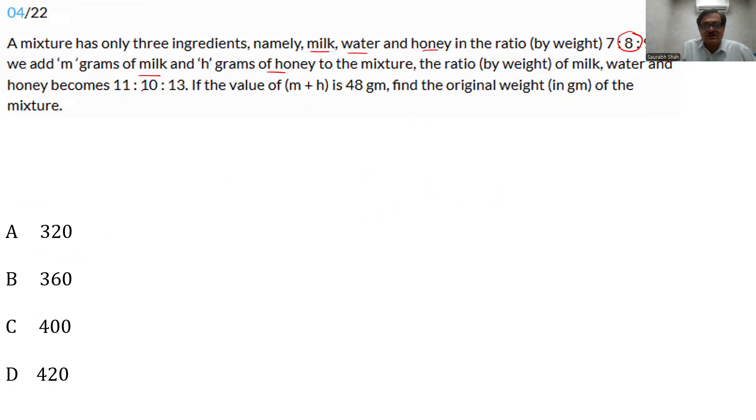In the earlier ratio, the water is mentioned with 8. And in the final one, 10. These two numbers should be the same. Simply take the LCM 40. Multiply the first initial ratio by 5: we have 35, 40, 45. And the final ratio by 4: we will add 44, 40, 13 into 4 is 52. This means if these are our numbers, we would be adding 9 grams of milk and 7 grams of honey. And 9 plus 7 would give us 16. But the question says what we have added, m plus h 16, is not 16 but it is 48 which we simply know as 16 into 3. All we need to do is multiply all the numbers by 3. The initial weight would have been 35 plus 40 is 75, 75 plus 45 is 120. So when we multiply 120 by 3, we get the final answer: 360 grams.